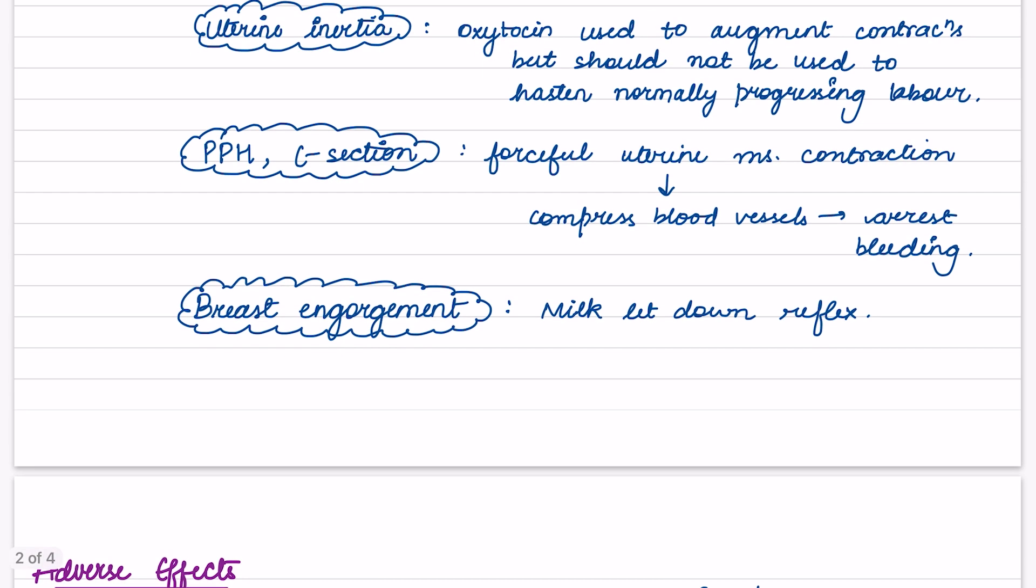Next is postpartum hemorrhage or C-section. Forceful uterine muscle contraction compresses the blood vessels and it can arrest bleeding. Breast engorgement: milk let down reflex.